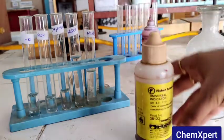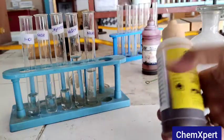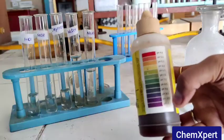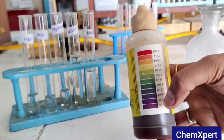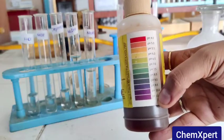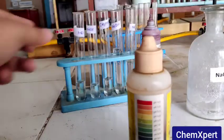Now we will put this universal indicator in each of the test tubes and we will observe what are the changes in color. The color chart for the different pH range is given on this bottle. By comparing this pH chart we are able to find out the nature of the given solution.